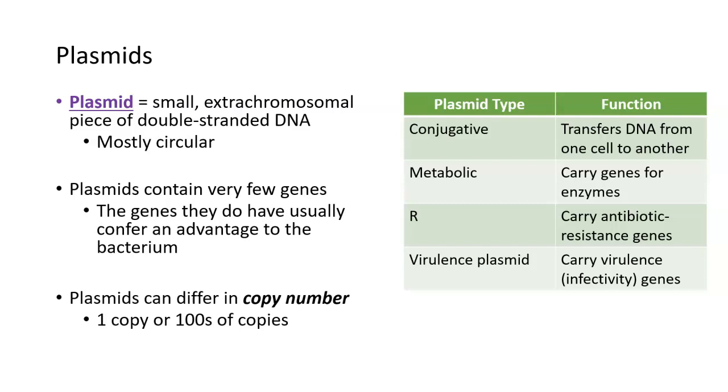Rather than there just being one copy of a plasmid like there's one copy of the bacteria's chromosome, plasmids can differ in how many there are inside a bacteria. A bacteria might have one plasmid inside it, or it might have hundreds of copies of this R plasmid, for example, inside.